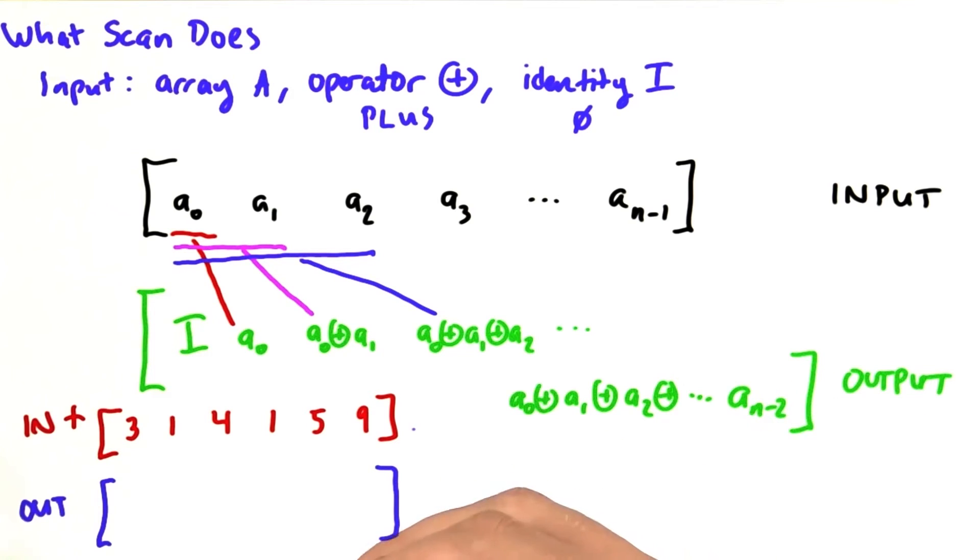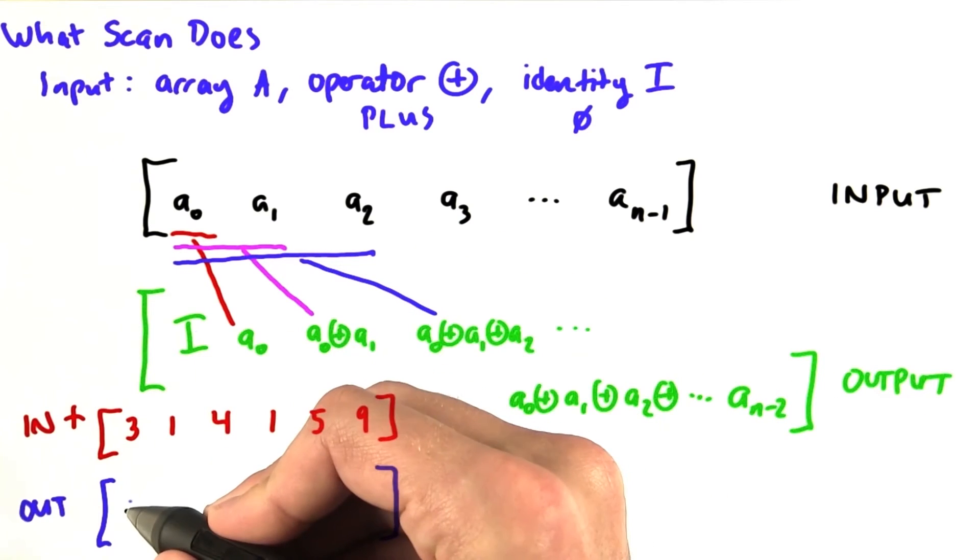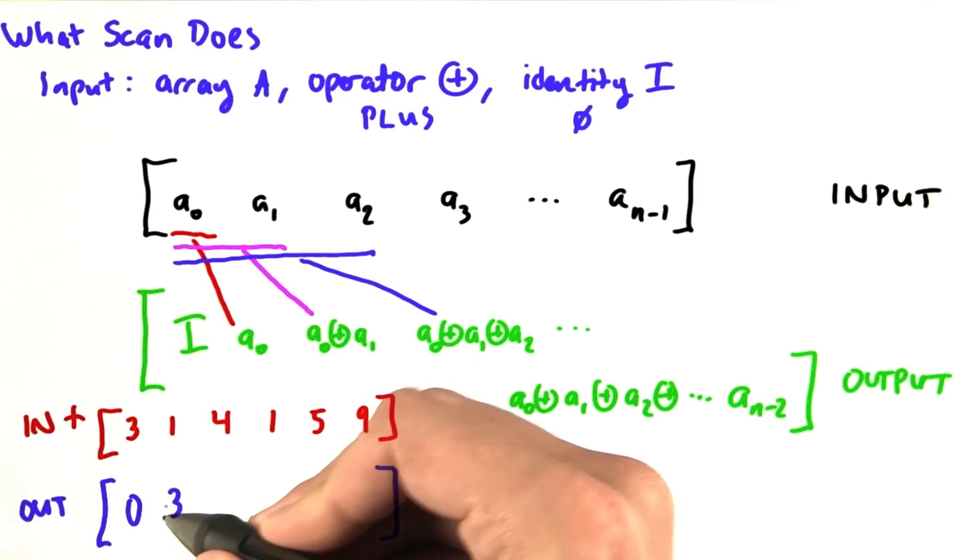So, how do we compute the output? First, we always start with the identity element. Then we start with the first element, 3.